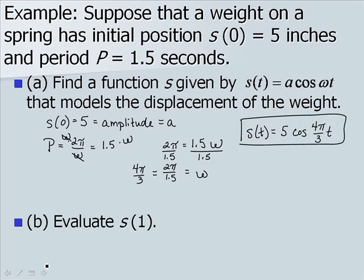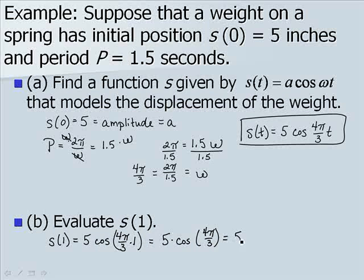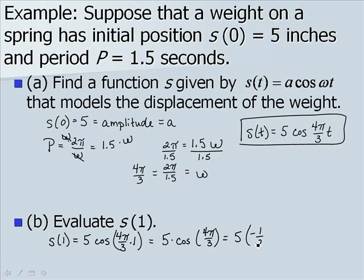Now we want to evaluate S of 1. So in our equation, we're replacing t with 1. So we want to find 5 times the cosine of 4 pi over 3. When you evaluate cosine of 4 pi over 3, you'll get the value negative 1 half. And when we multiply that by 5, we get negative 2.5.